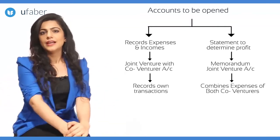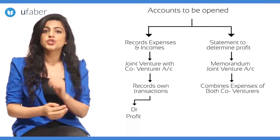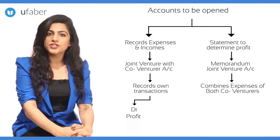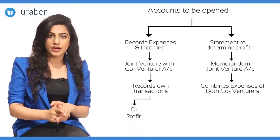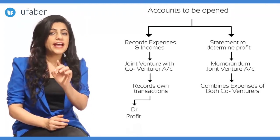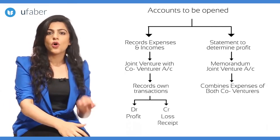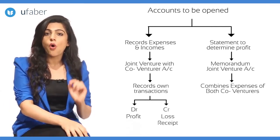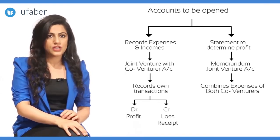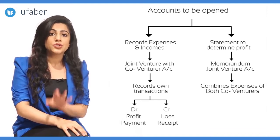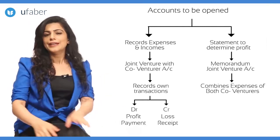Let us consider the accounts in the books of X to understand accounting better. The share of profit earned by X is also debited to the Joint Venture with Co-venturer Account, while X's share of loss is credited. Any receipt on account of the joint venture or from the co-venturer is credited to this account, while any payment to the co-venturer is debited to this account.